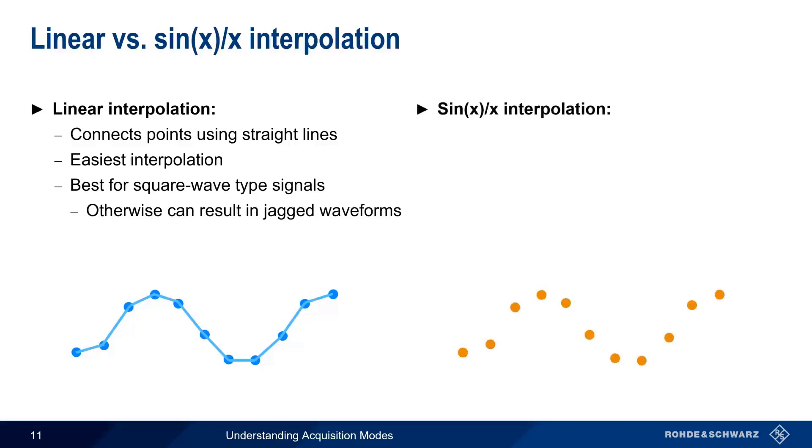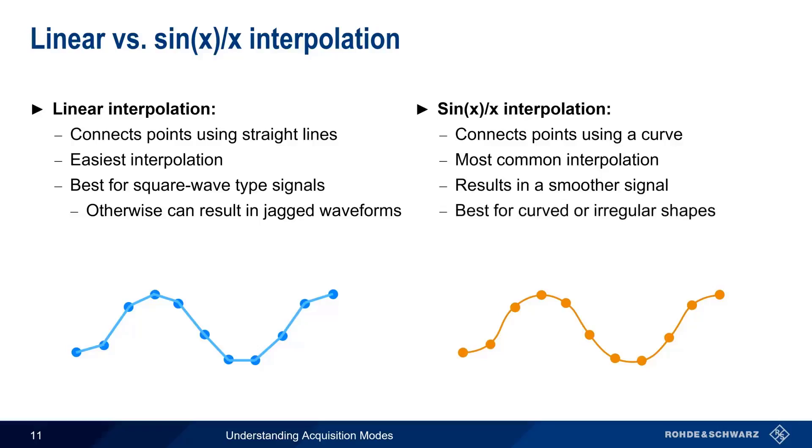Sine x over x, on the other hand, connects the waveform points using a curve. This is the most common interpolation and is the default on most oscilloscopes. The resulting signal is smoother than a linear interpolation, and sine x over x works best on curve signals or signals with irregular shapes.